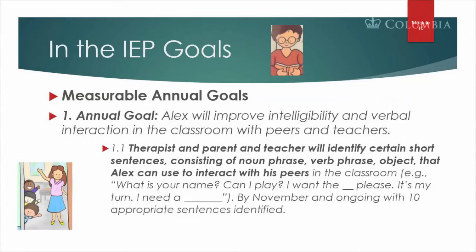We want the parent, teacher, and therapist to identify certain short sentences — consisting of noun phrase, verb phrase, object — that Alex can use to interact with his peers in the classroom, e.g., 'what is your name,' 'can I play,' 'I want them please,' 'it's my turn,' 'I need a blump.' We want to identify ten sentences that will help Alex interact with his peers almost immediately, so we can practice at home and in therapy and then start to use them in the classroom.